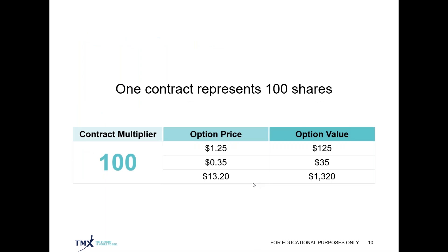Remember that one contract, whether a call or a put option, represents 100 shares of the underlying security. When looking at an options chain — which is how options prices, contracts, expiration dates, and strike prices are presented to investors — the price is listed on a per share basis. With the contract multiplier being 100, if you're looking at an option price listed at $1.25, you simply multiply that premium by 100 and the cost of that contract is $125.